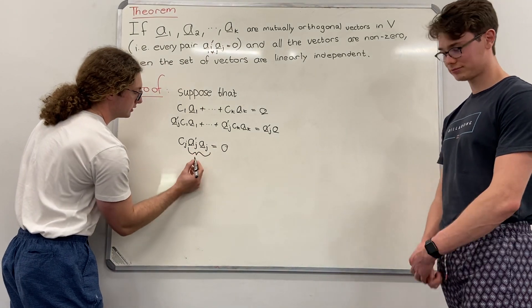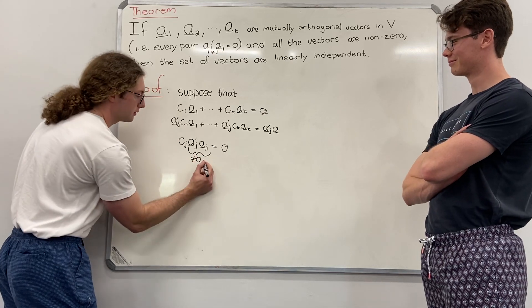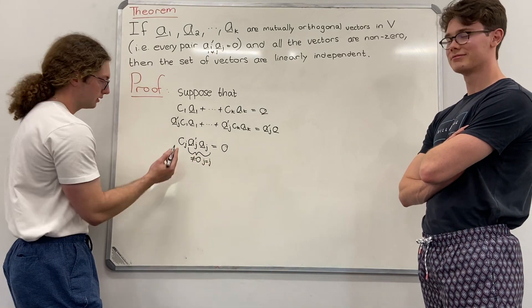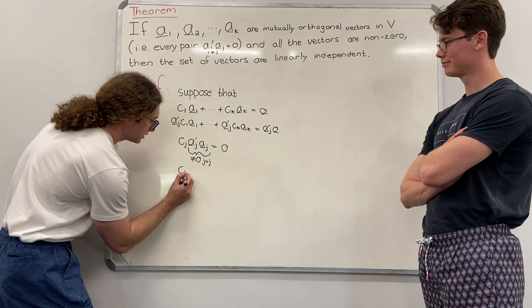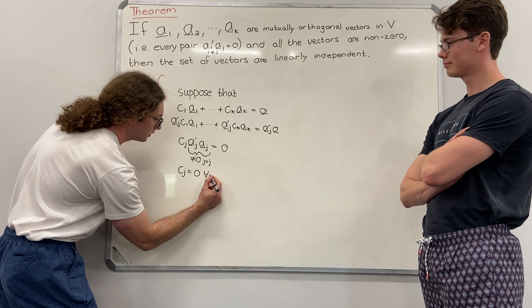Therefore, since these must be equal to 0 for j equals i, therefore C_j equals 0 for all j.